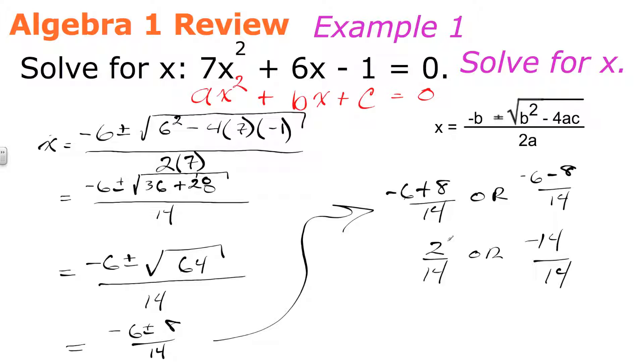2 and 14, so it's divisible both by 2. So, we can reduce it by a factor of 2. 2 ÷ 2 is 1, 14 ÷ 2 is 7. Or the other solution, -14 ÷ 14 is -1. So, here are our two solutions.